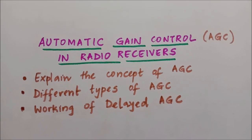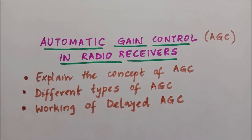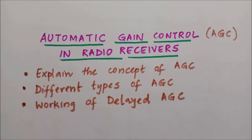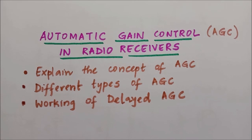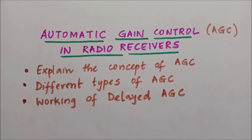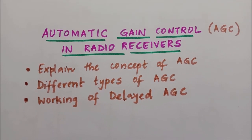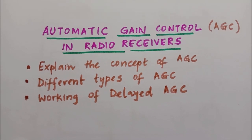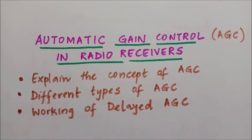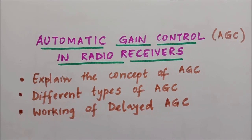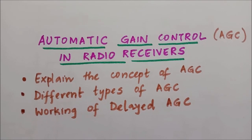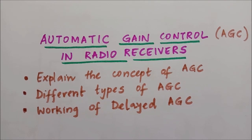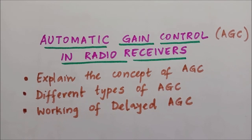Hello everyone. The topic for today is automatic gain control in radio receivers. In this lecture we shall discuss the concept of automatic gain control or AGC. Automatic gain control is a mechanism wherein the overall gain of the radio receiver is automatically varied according to the changing strength of the received signal.